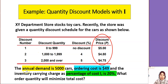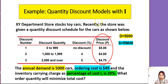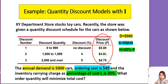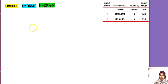The example gives us annual demand D = 5,000, ordering cost S = 49, and the carrying cost is given as a percentage — H equals 20% of the price. So it's going to be a different H for each price. We want to find the quantity that will minimize the cost, so the first step is to find Q.